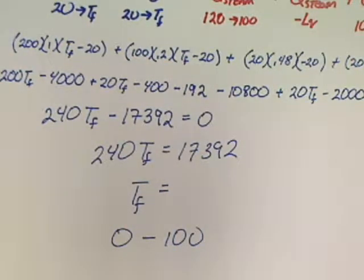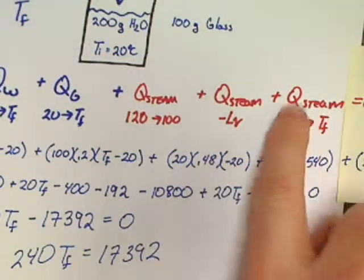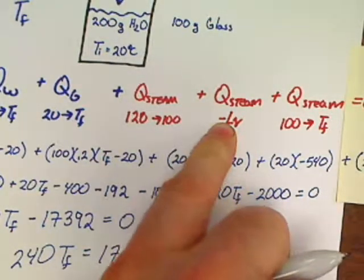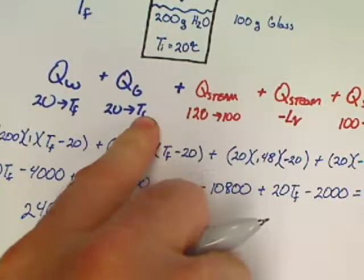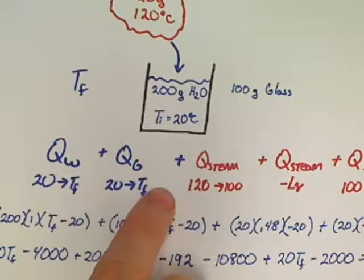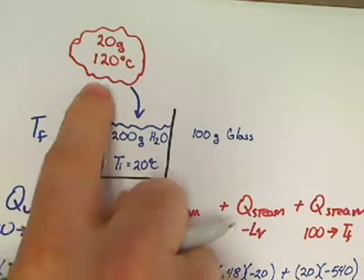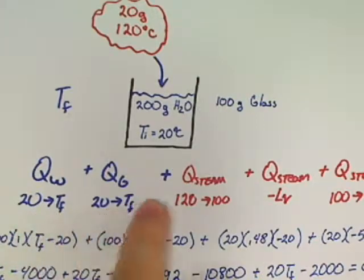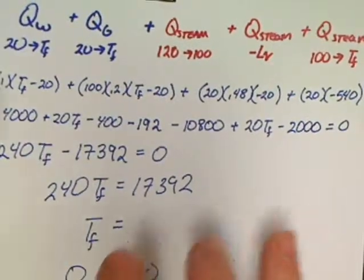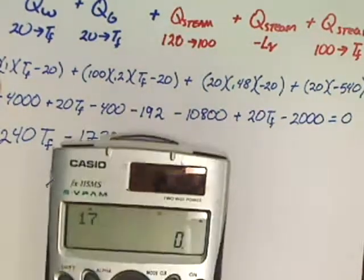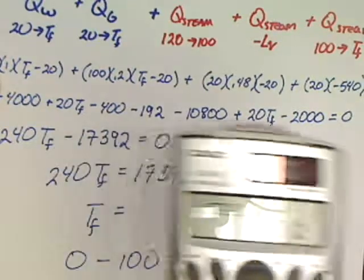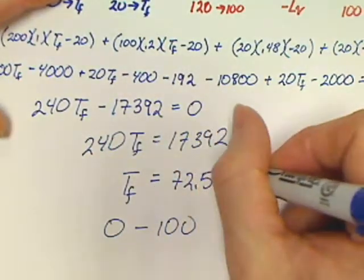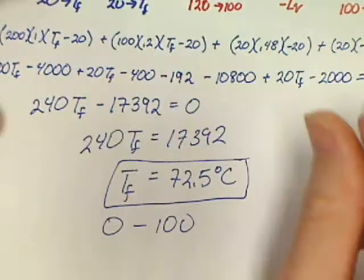Otherwise we'd have to go back and cut off the last piece — just like on the ice question — and solve for the mass of steam converted. If not all the steam turns to water, all temperature finals would be stuck at 100. TF equals 17,392 divided by 240, which gives 72.5 degrees Celsius. That's the final temperature.